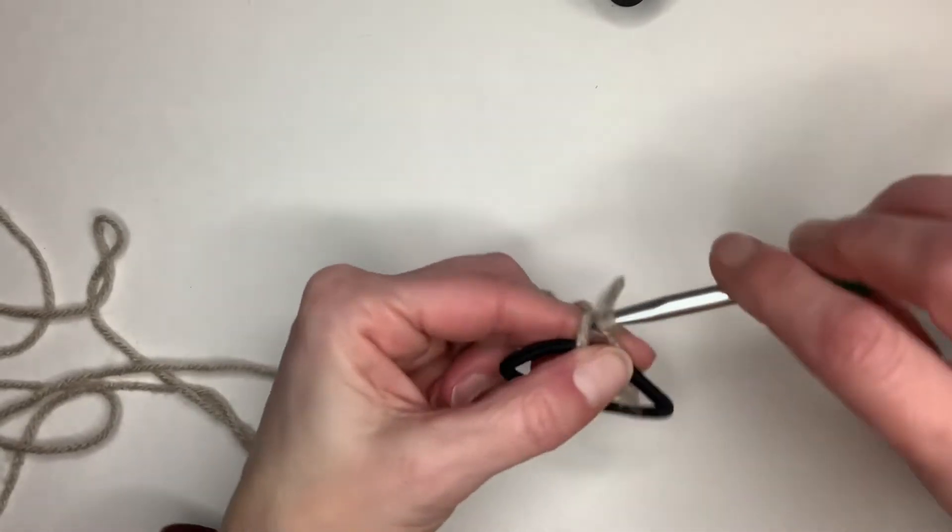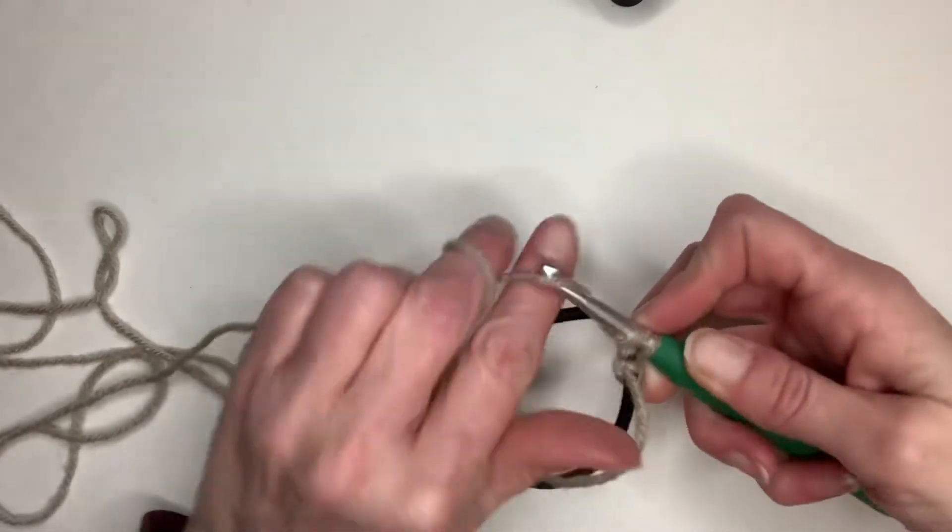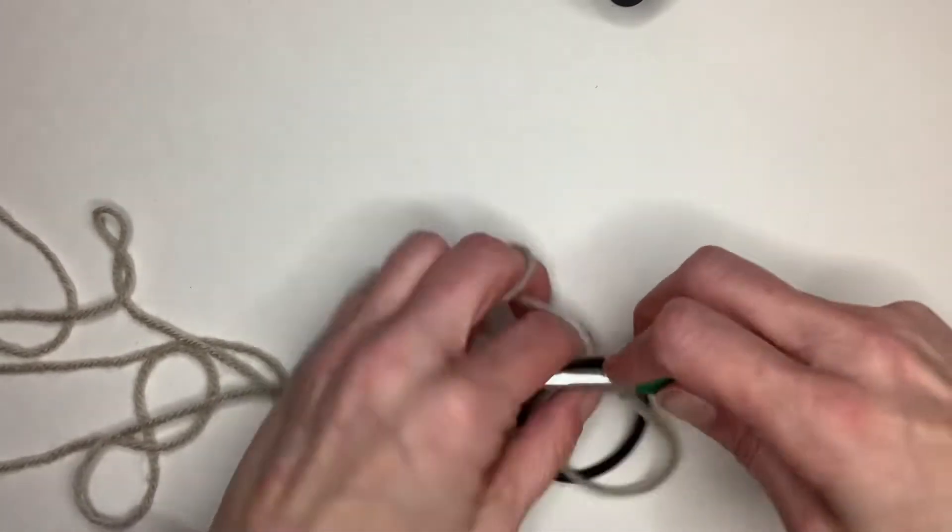You're just going to do single crochets all the way around the hook. So pull it through, wrap it around and pull through two.